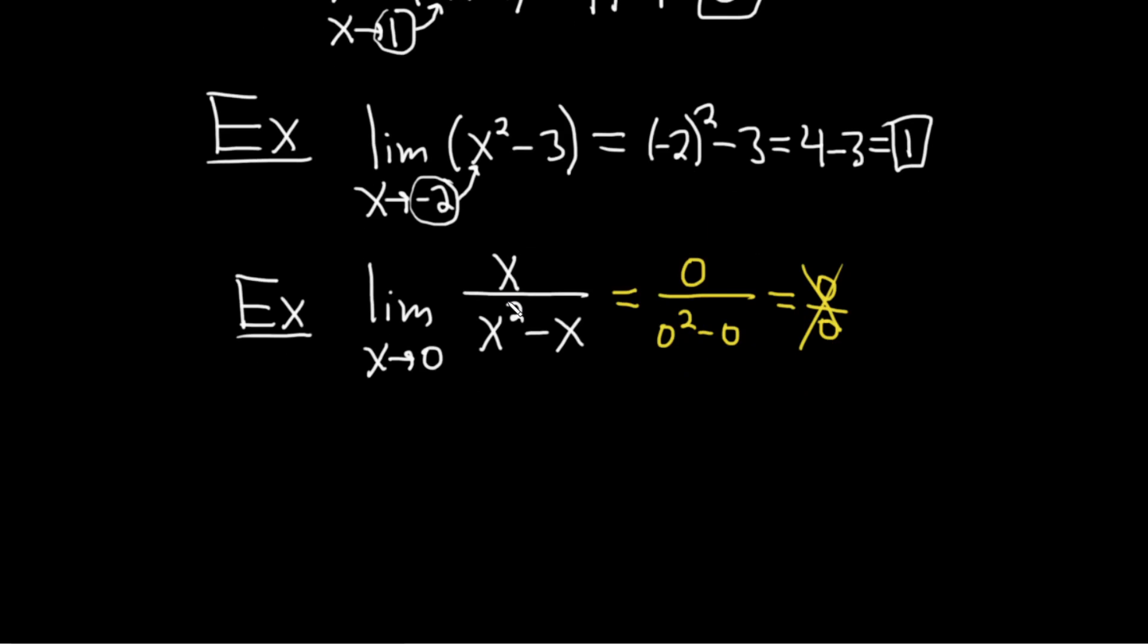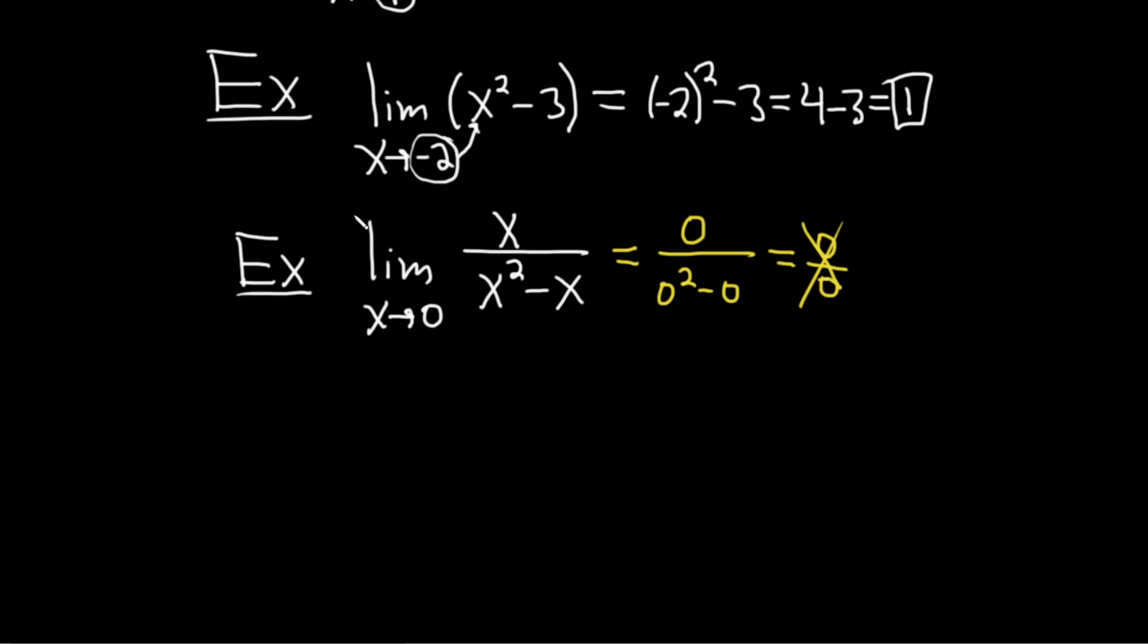So what do we do? Well, we do something else. In this case, factoring is going to be a good idea. So let's go ahead and rewrite our original problem. Notice I'm writing the limit sign again. You always have to write the limit sign until you plug in the number. So we're not plugging in the number in this step.